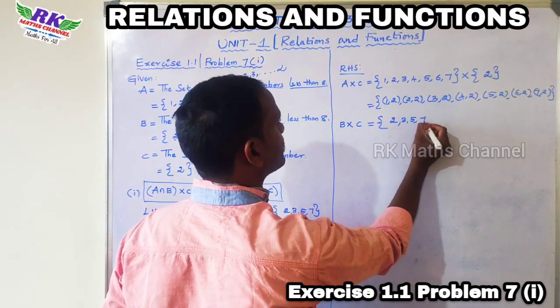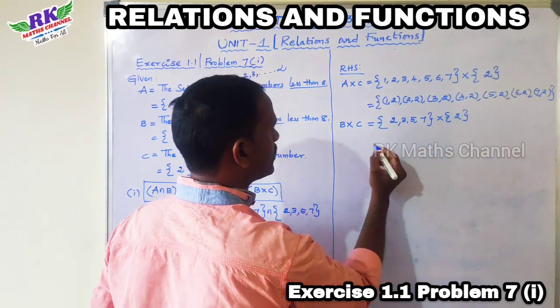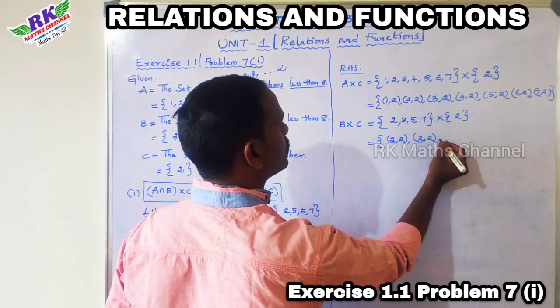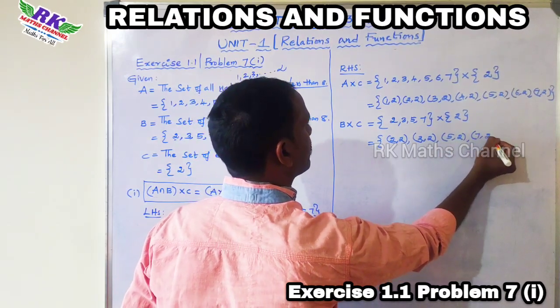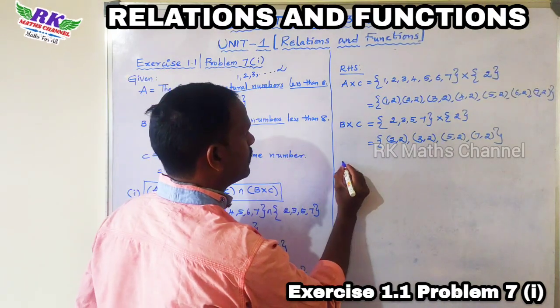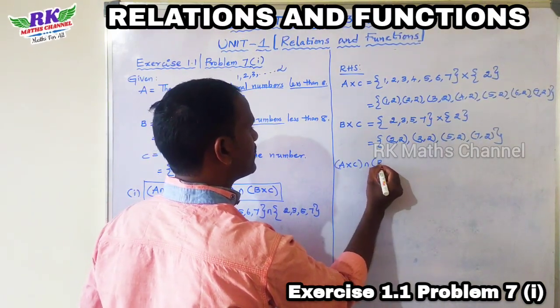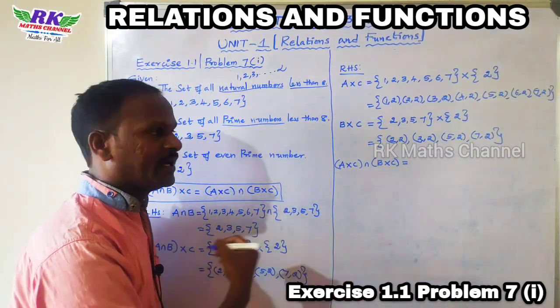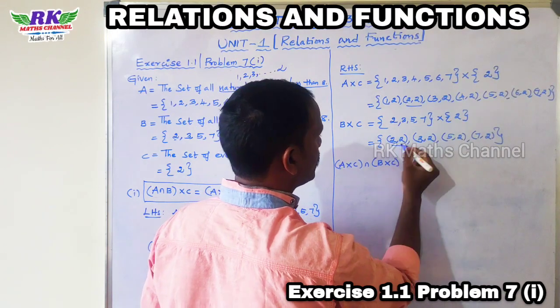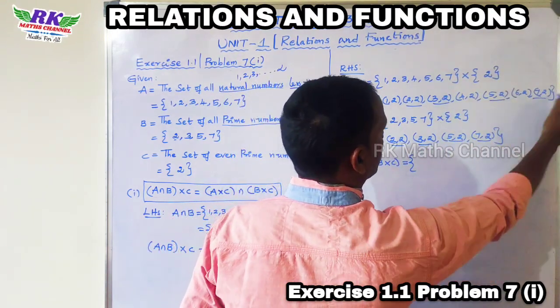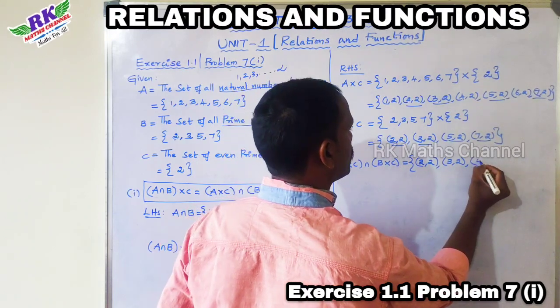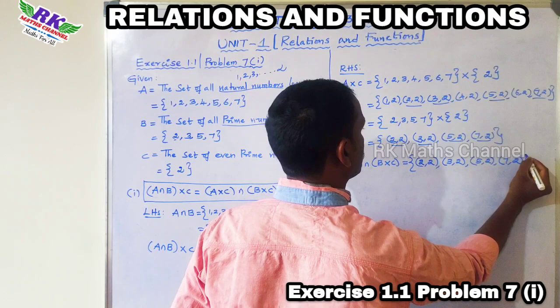B cross C. B is 2, 3, 5, 7 cross product C which is 2. This gives B cross C as (2,2), (3,2), (5,2), and (7,2).